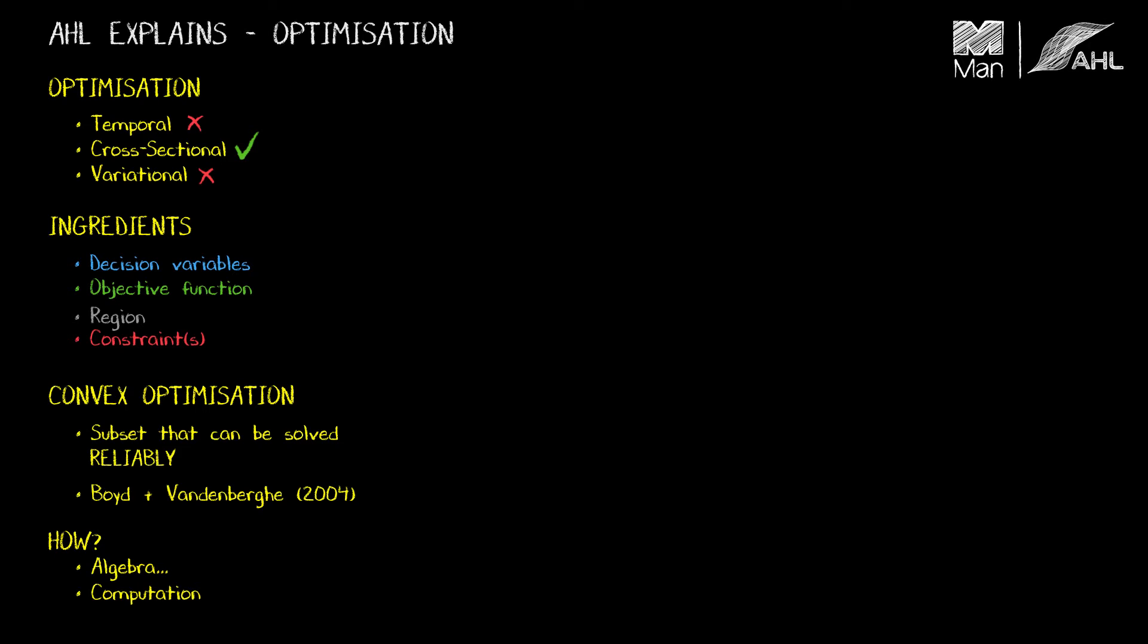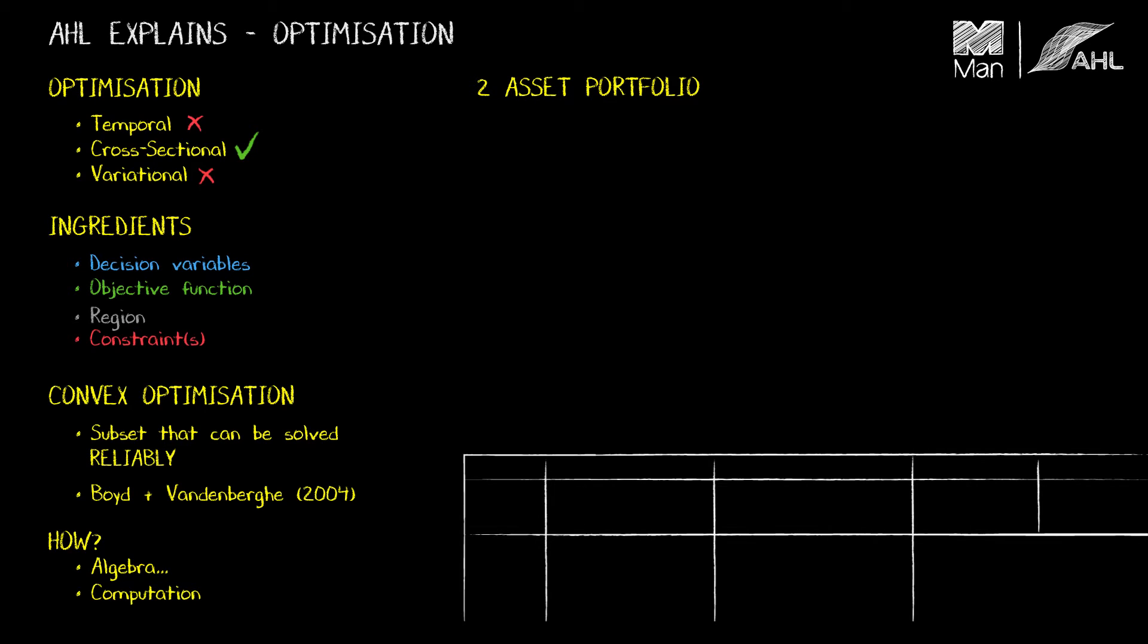Okay, so we're going to set up a two-asset portfolio optimization problem and I'm going to keep track of the quantities I need in this table down here. So I'm going to have assets A and B with expected returns or mean returns given by MA and MB, and I'm going to assume those are both greater than zero. They will have risk RA and RB respectively, and by risk I mean their standard deviation. And the correlation between these two assets will be rho.